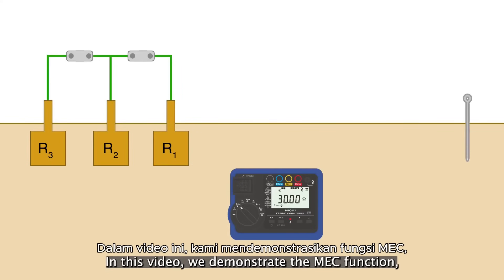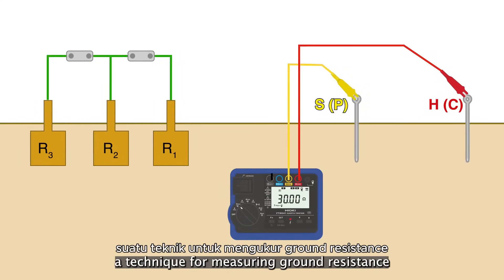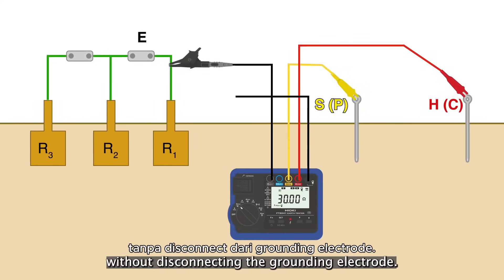In this video, we demonstrate the MEC function, a technique for measuring ground resistance without disconnecting the grounding electrode.